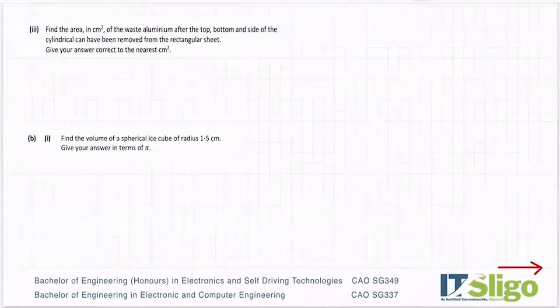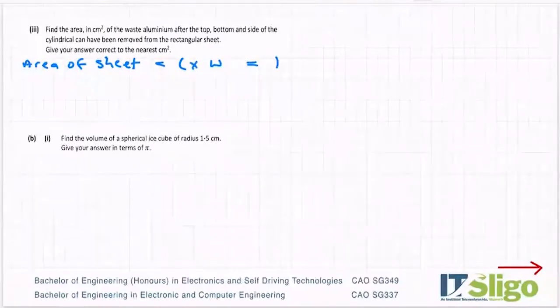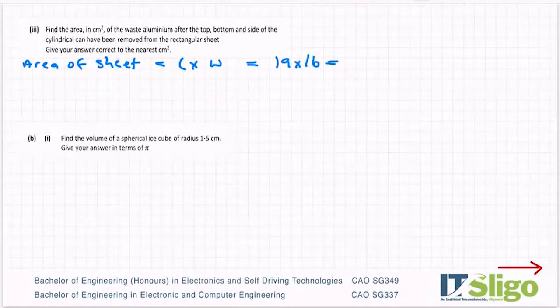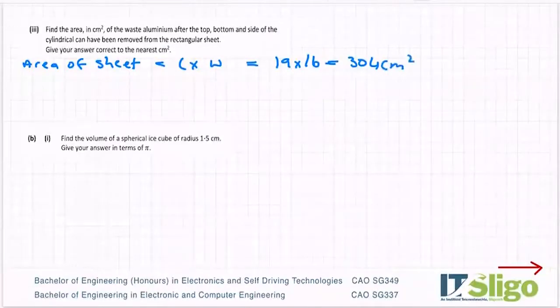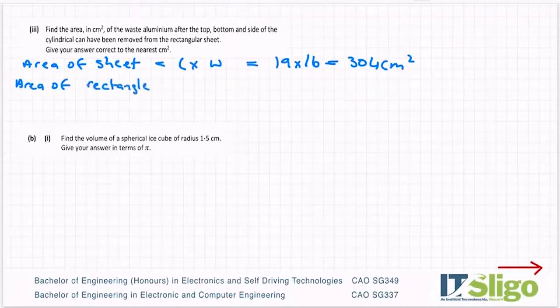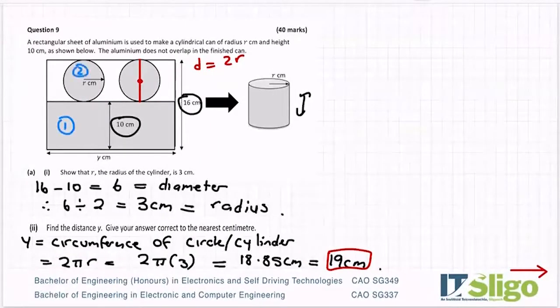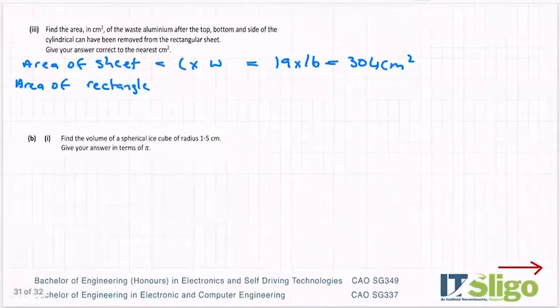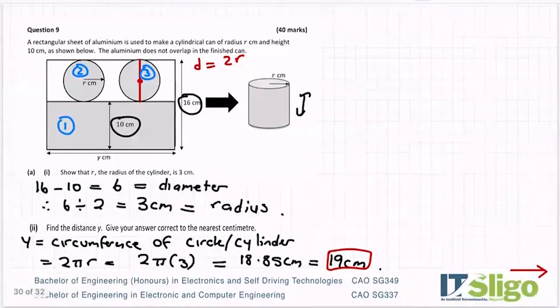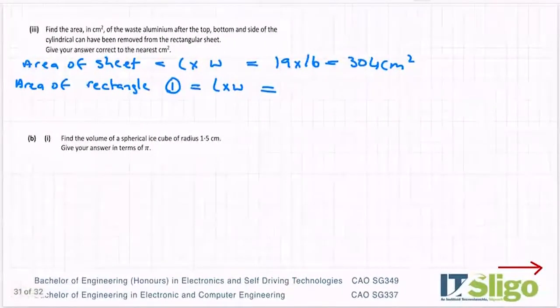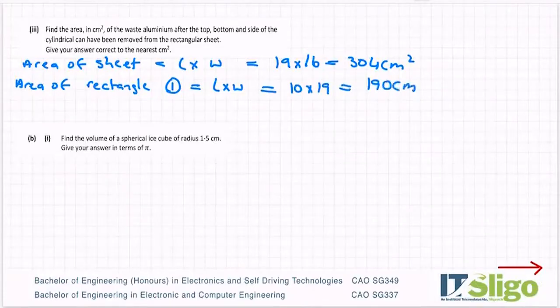So area of sheet, it's length by breadth or length by width. What's that, 19 by 16? 304 centimeters squared. Area of cylinder, or area of rectangle we'll call it that. So I'm going to call him area 1, him area 2, him area 3. So this is area 1, so again it's a length by width. It's 10 by 19. That's 190 centimeters squared.